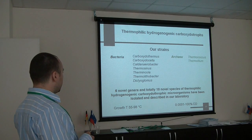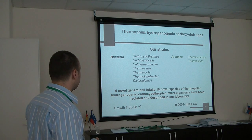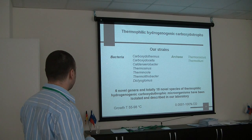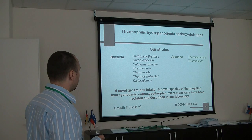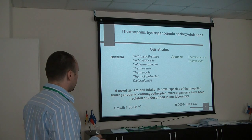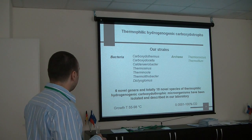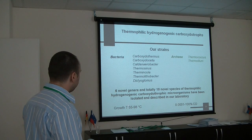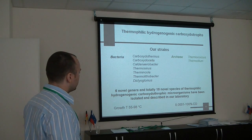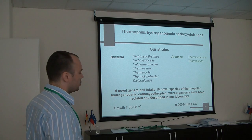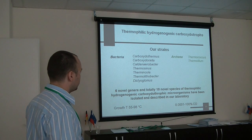Since that time, we have isolated six novel genera and novel species of different thermophilic and hyperthermophilic bacteria and archaea, and many, many more strains without taxonomic identification. They are growing at temperatures roughly from 55 to 98 degrees, and in CO concentrations up to 100%. Not all of them can grow at 100%, but some of them can.